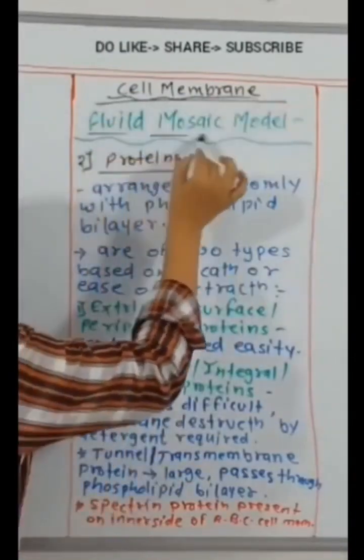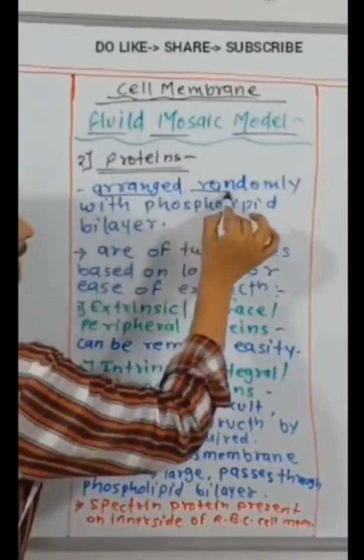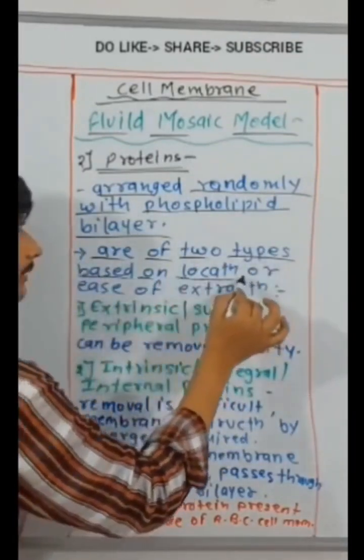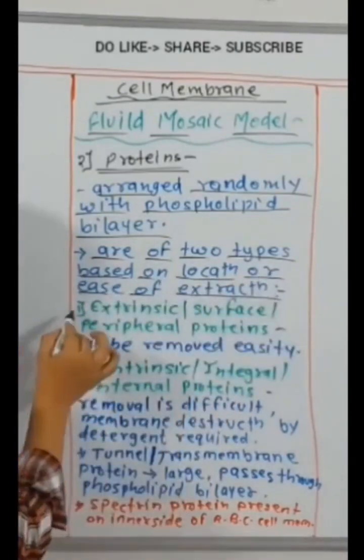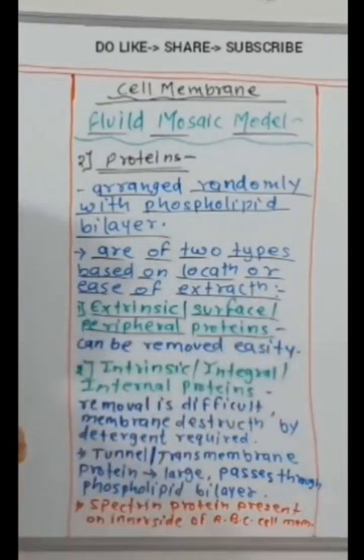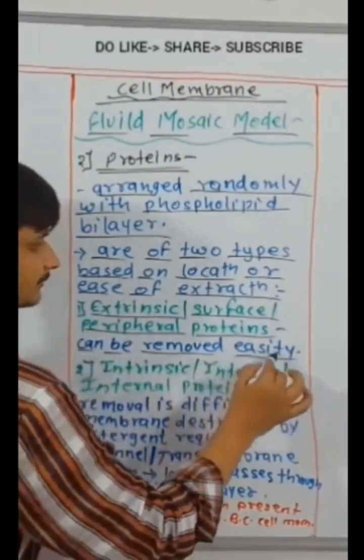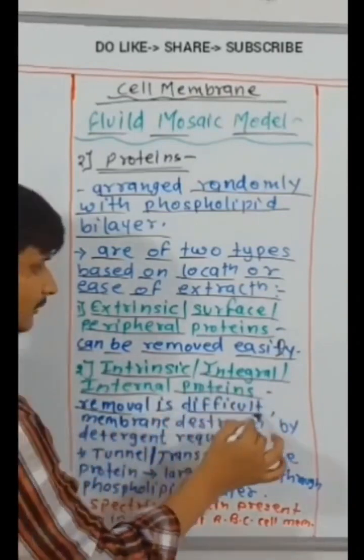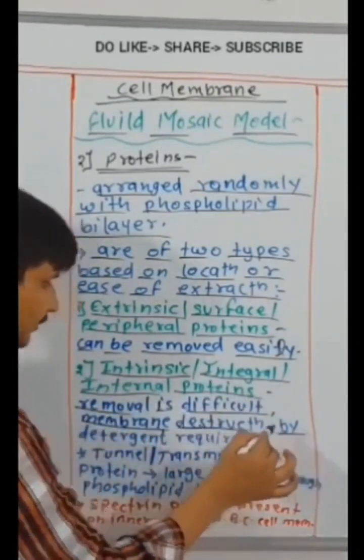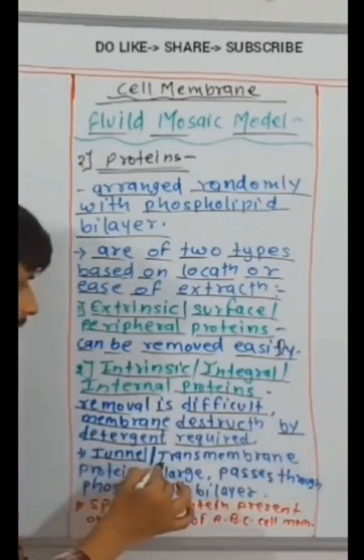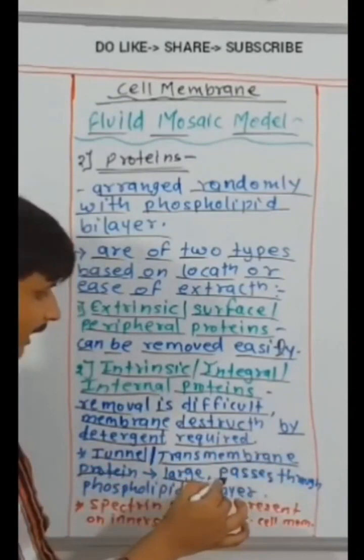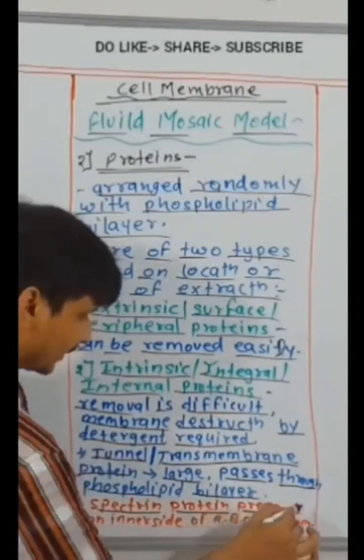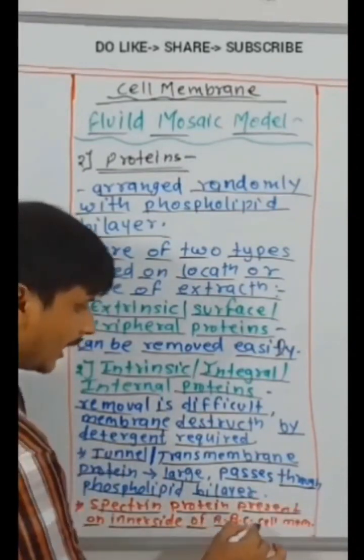Proteins arranged randomly with phospholipid bilayer are of two types based on location or ease of extraction. Extrinsic surface peripheral proteins can be removed easily. Intrinsic integral internal proteins, removal is difficult. Membrane destruction by detergent required. Tunnel transmembrane protein large passes through phospholipid bilayer. Spectrin protein present on inner side of RBC cell membrane.